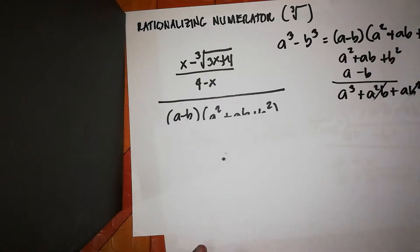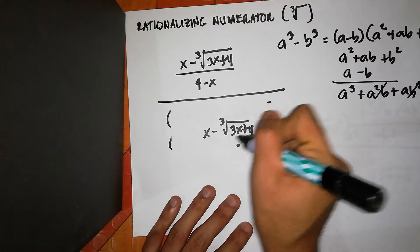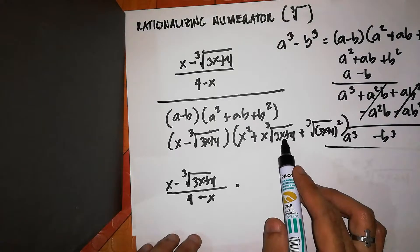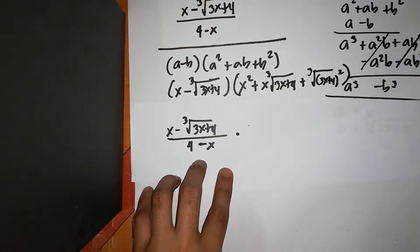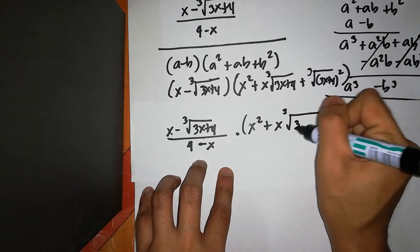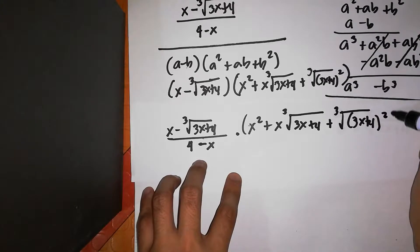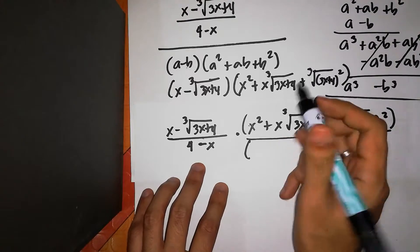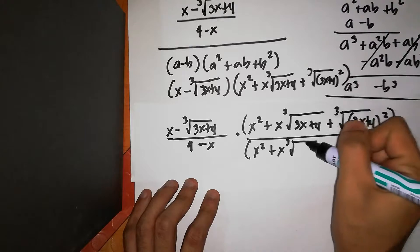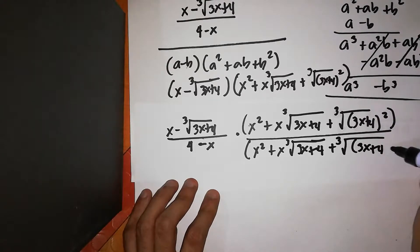So let's go back to the expression. Our expression is x minus cube root of 3x plus 4, all over 4 minus x. We multiply by the multiplier: x squared plus x times cube root of 3x plus 4, plus cube root of 3x plus 4 squared — both in the numerator and denominator.